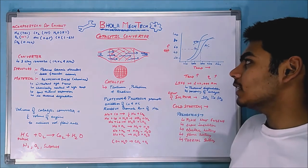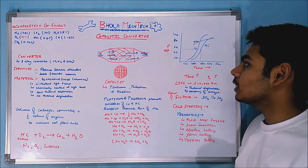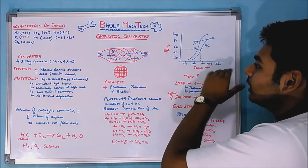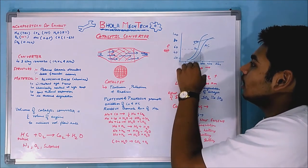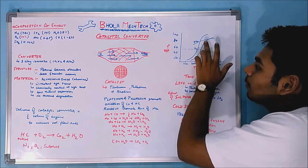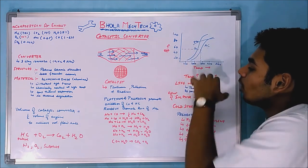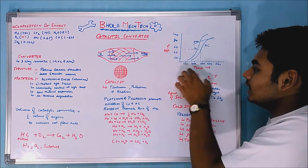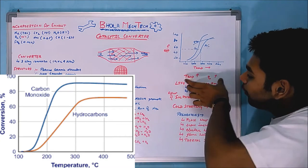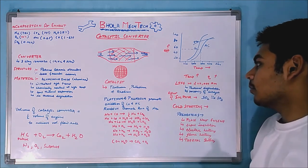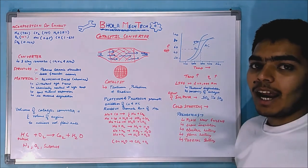Coming to the efficiency of the catalytic converter, there is a graph showing efficiency versus temperature, along with the concentration of carbon monoxide, hydrocarbons, and NOx. From this graph, you can clearly observe that as temperature increases, the efficiency also increases. That is why it is advisable to use catalytic converters at high temperatures.